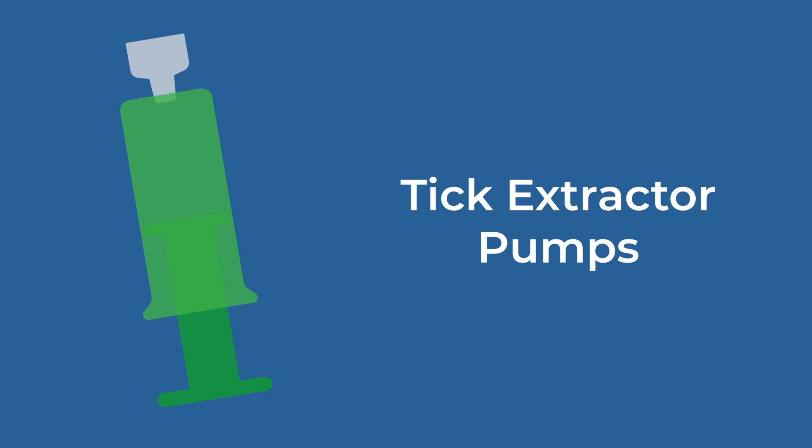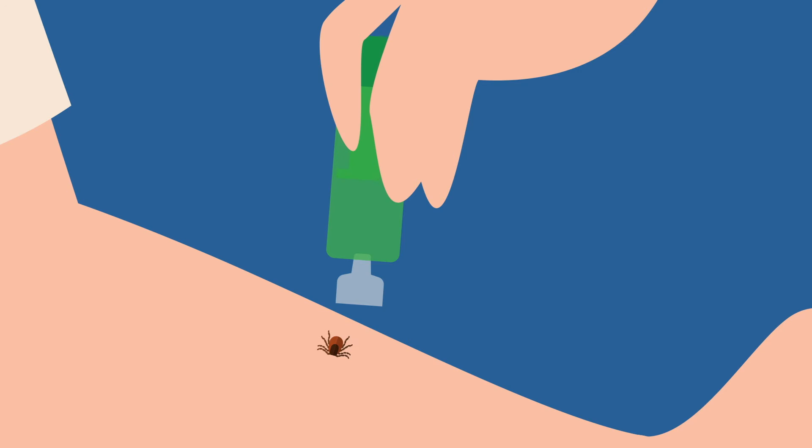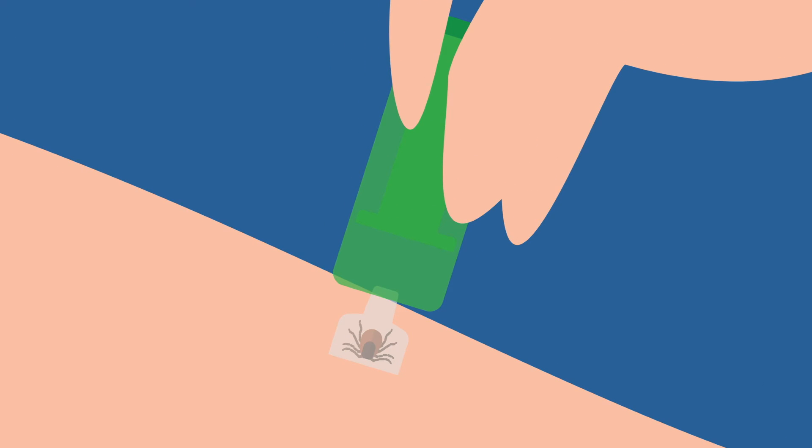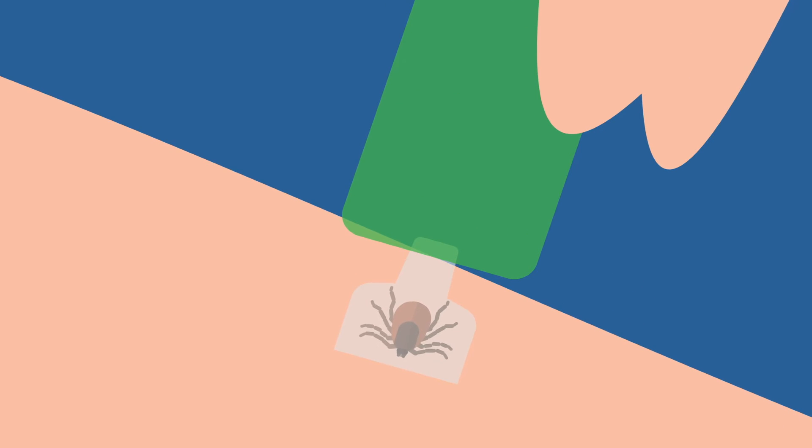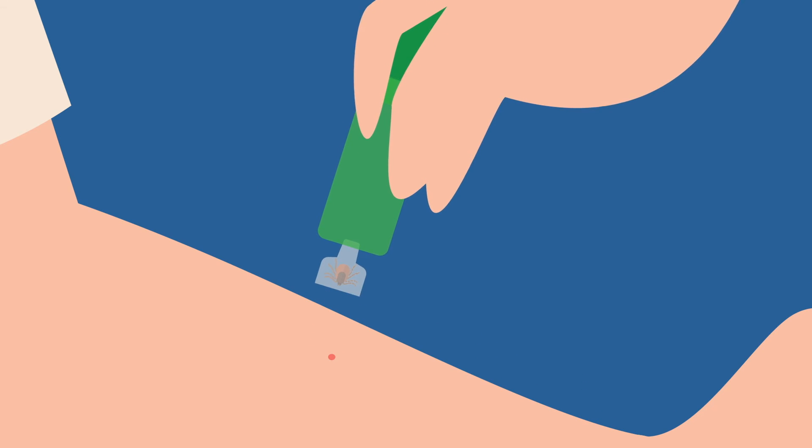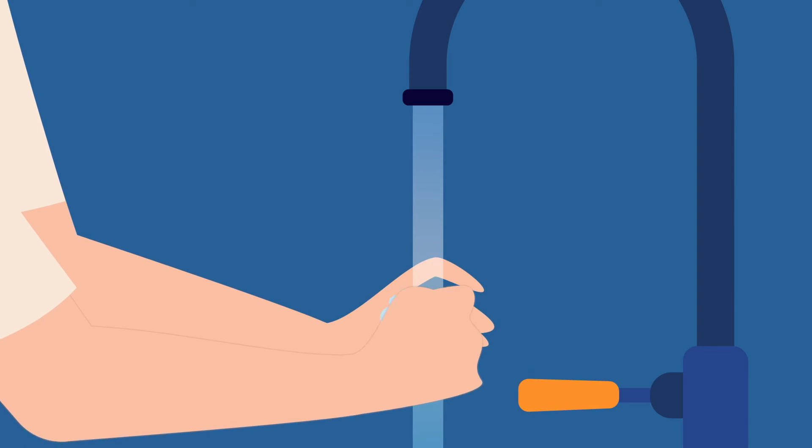Tick extractor pumps. Push the rubber pump plunger all the way in. Put the tip in the place where the tick is attached. The bite site must be in the central position of the tip. Slowly and evenly pull the plunger and hold it in this position for 20 seconds. Remove the tick. Disinfect the bite site and the tip of the tool. Wash or disinfect your hands.